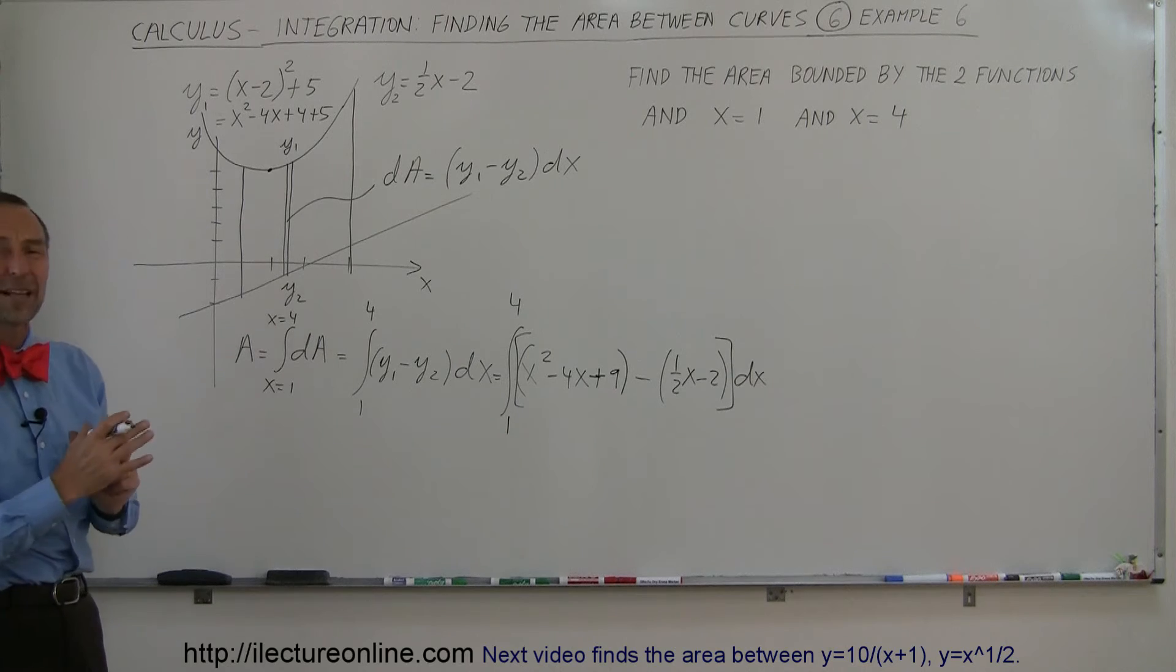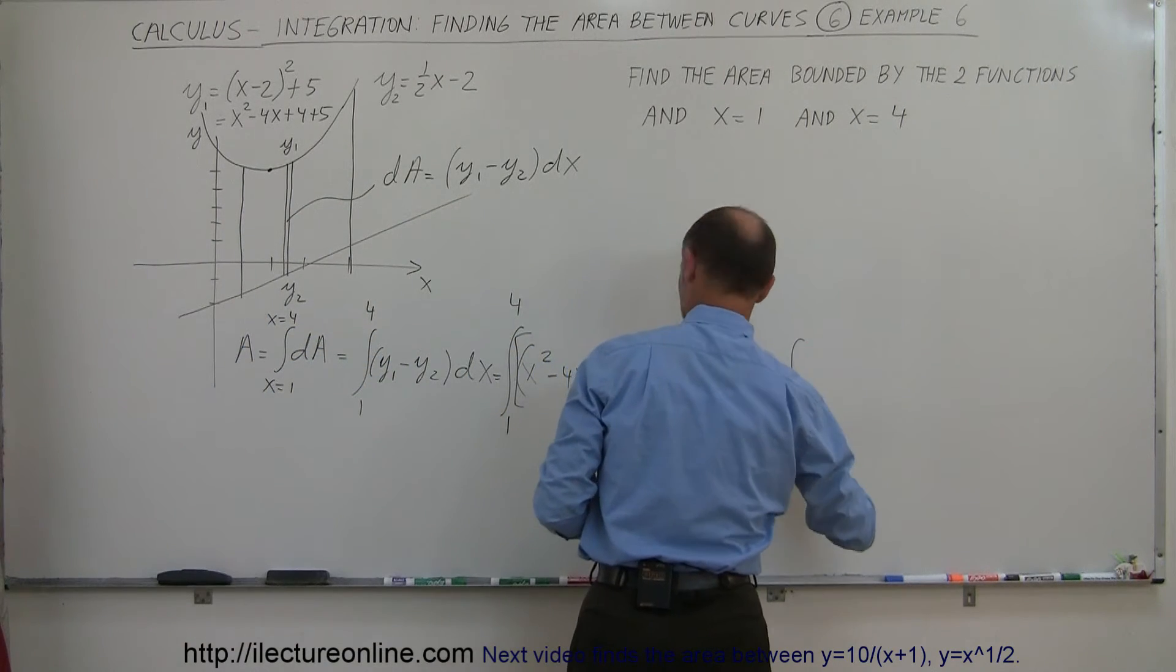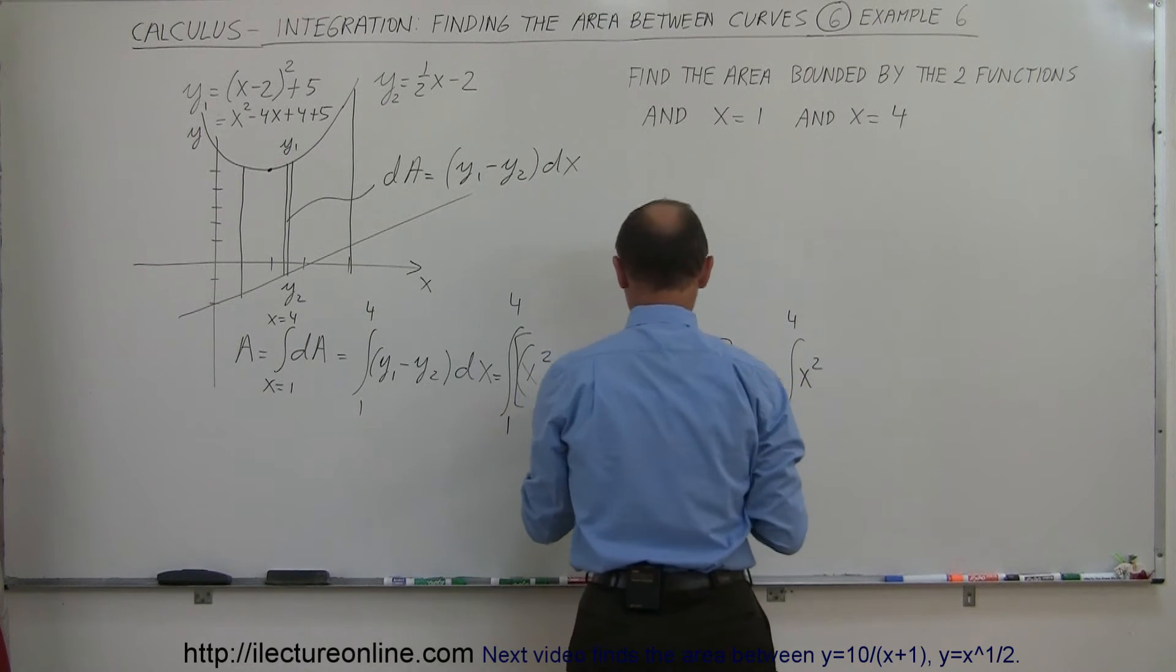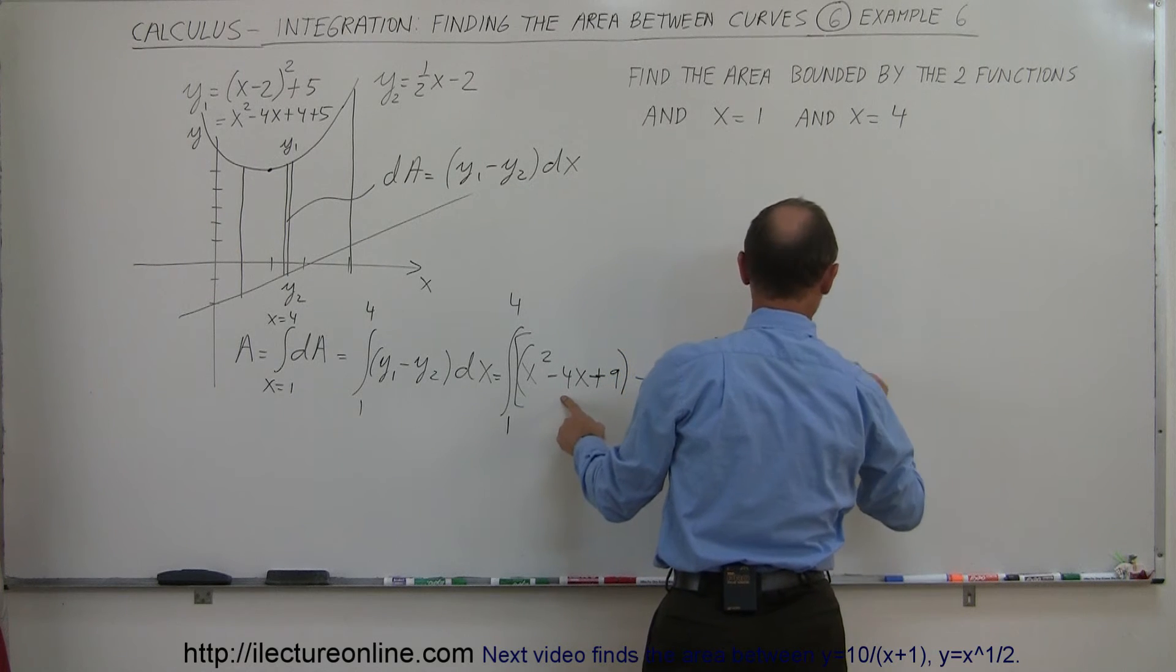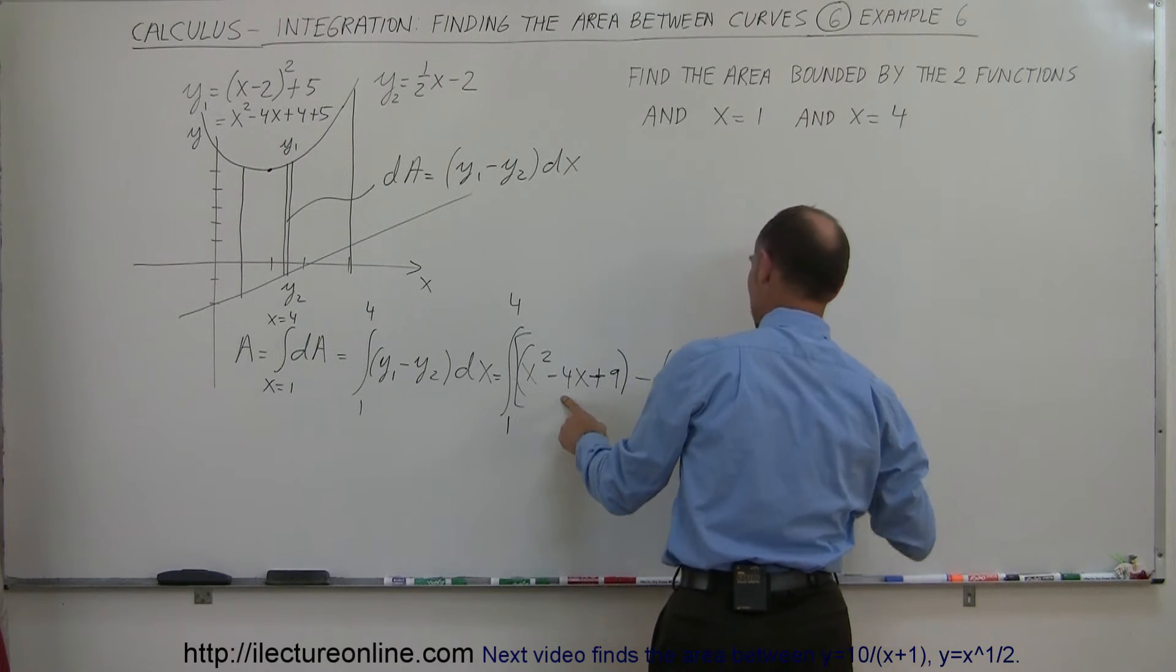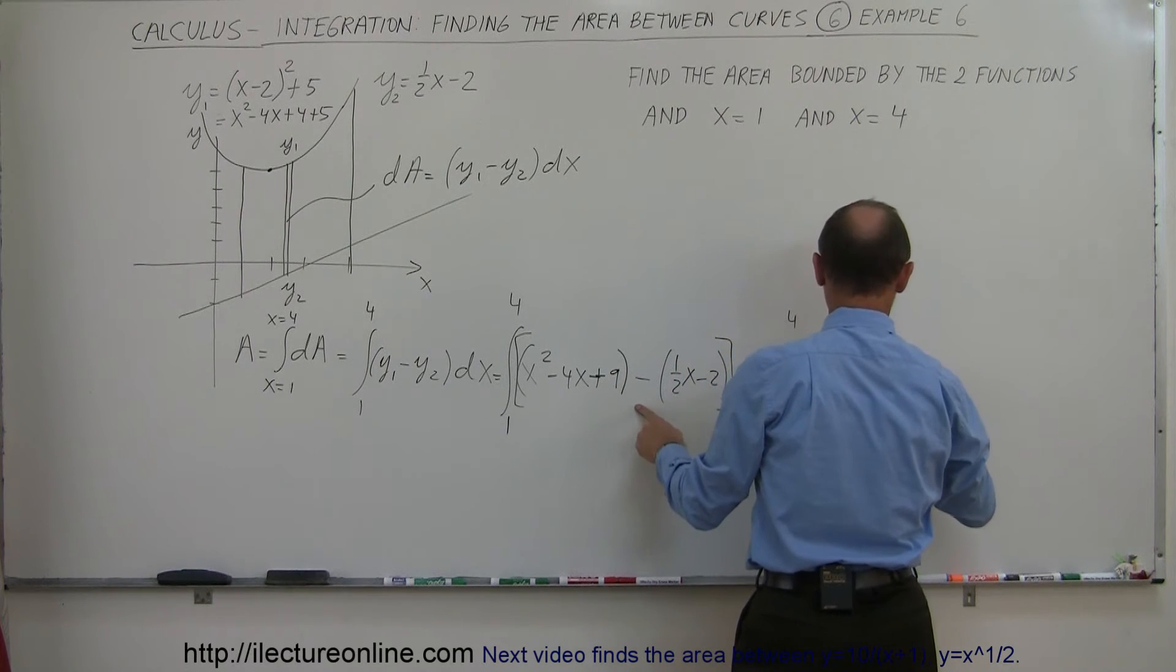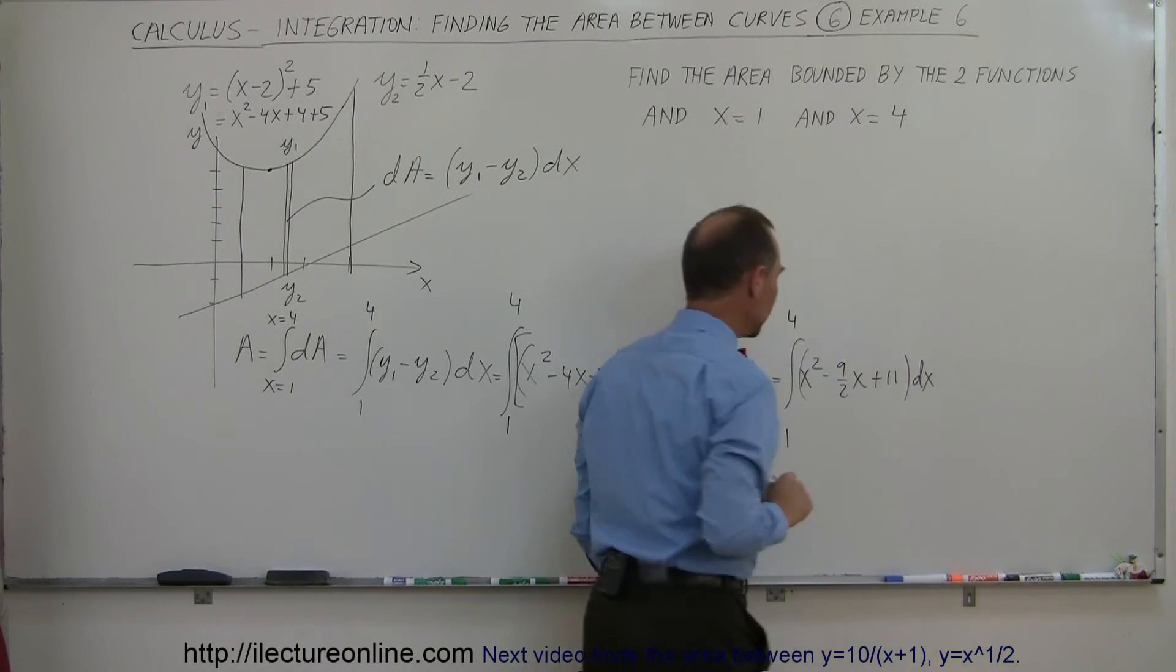Now I have to simplify that a little bit. So this is equal to the integral from 1 to 4, we have x squared minus 4x minus one half x. Minus 4 is the same as minus 8 over 2, that becomes minus 9 over 2x. And you have a plus 9 minus a minus 2, that gives me plus 11, and the whole thing multiply times dx. And now I'm ready to integrate that.